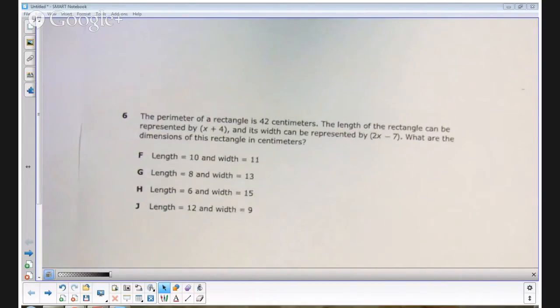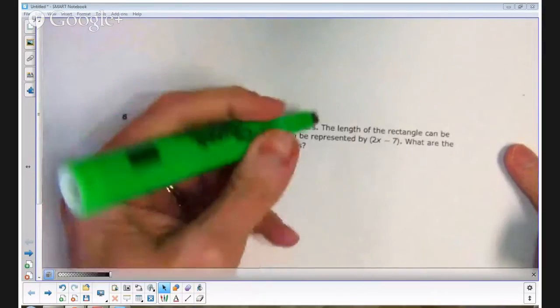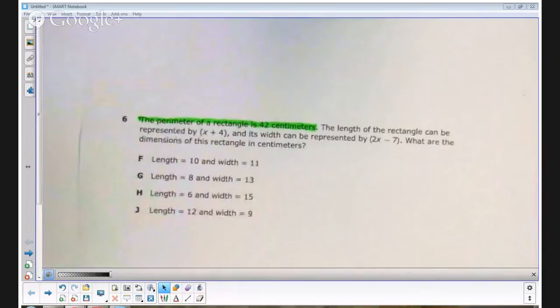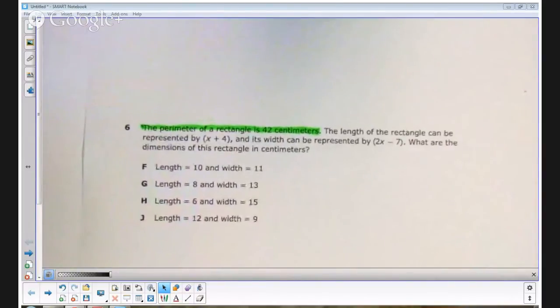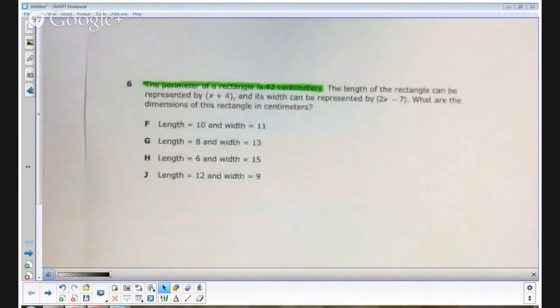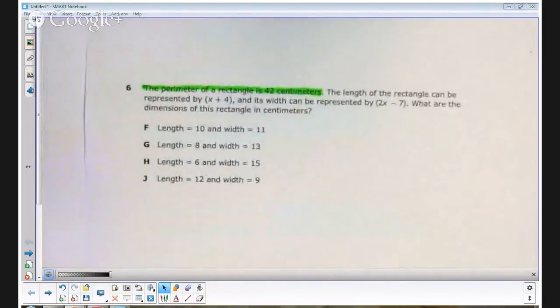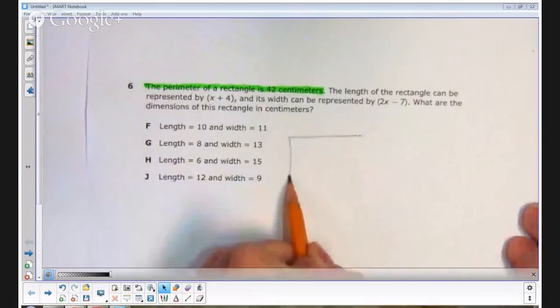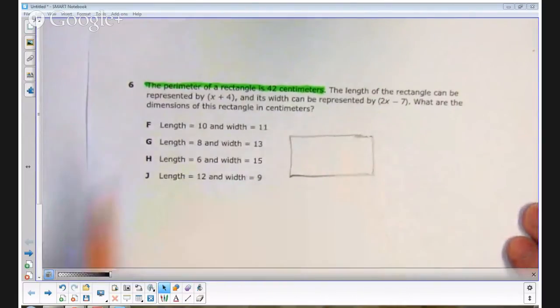We have four answer choices. Now the first thing I would suggest you look at is the perimeter of the rectangle is 42 centimeters. It's possible that we could eliminate some answer choices just by looking at that statement. So let's make sure that the perimeter is actually 42 centimeters for these answer choices. For the perimeter to be 42 centimeters, I'm just going to sketch a rectangle here.